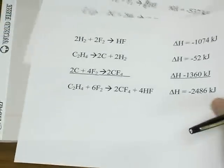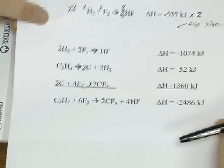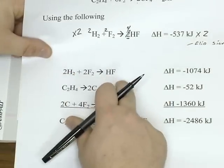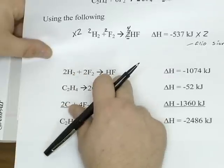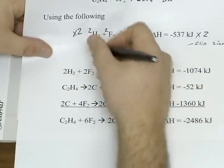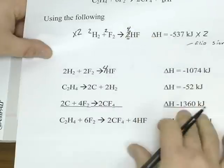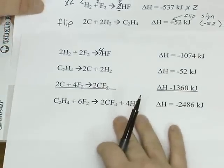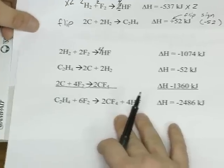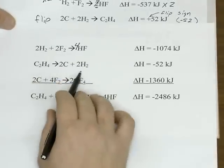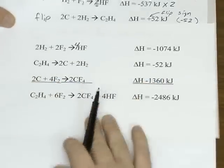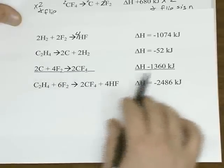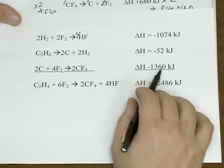So when we look at our modified equations, there's our first equation modified, where now the coefficients have been multiplied by two. And we've gone ahead and multiplied the delta H. We flipped this equation around, and again we flipped the sign. And for our last equation we had to do both, flip it and double. And so again we flipped the sign and we doubled it.